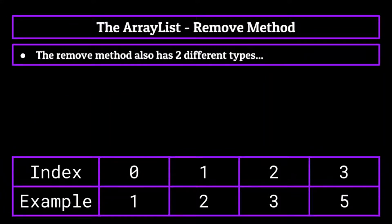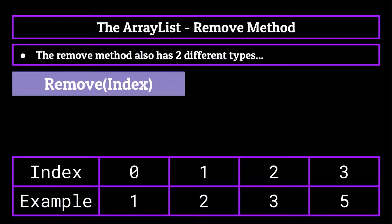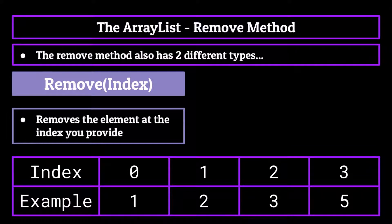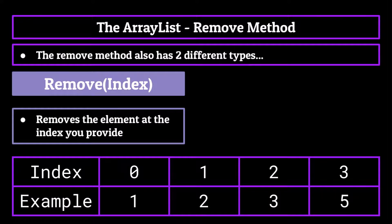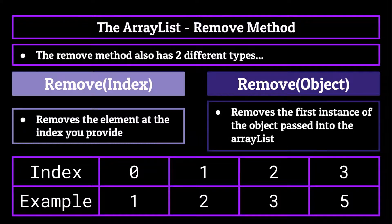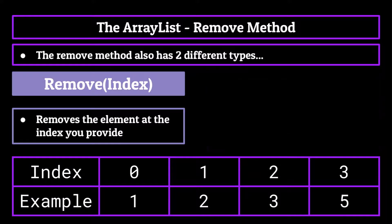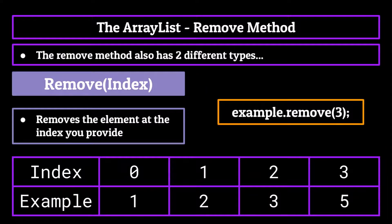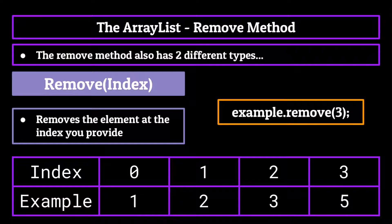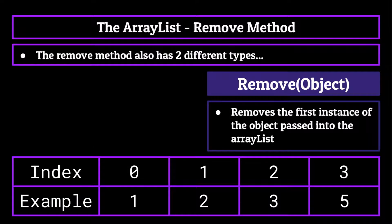Now the next method that comes prepackaged in the ArrayList class is the remove method. And this one also comes with two different types. The first takes in an integer as an argument, and just as the name suggests, will remove the element at that index location. The second takes in an object and will remove the first instance of that object within the ArrayList. So if we wanted to remove the number five from our ArrayList, we'd have two different options. We can either call example dot remove and inside the parentheses place the index of the value we want to remove. In this case three since it's at the third index, and the program will remove the object at index three.